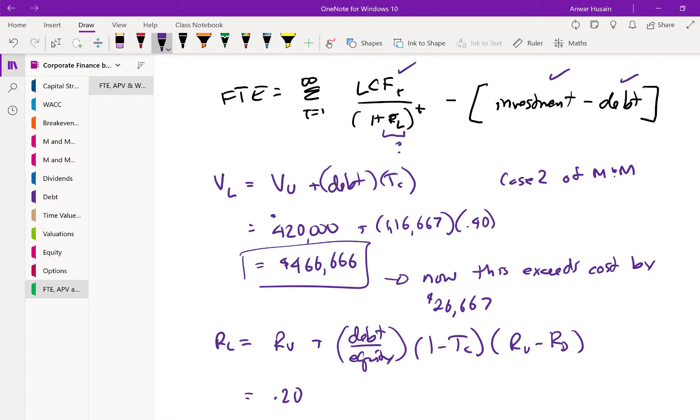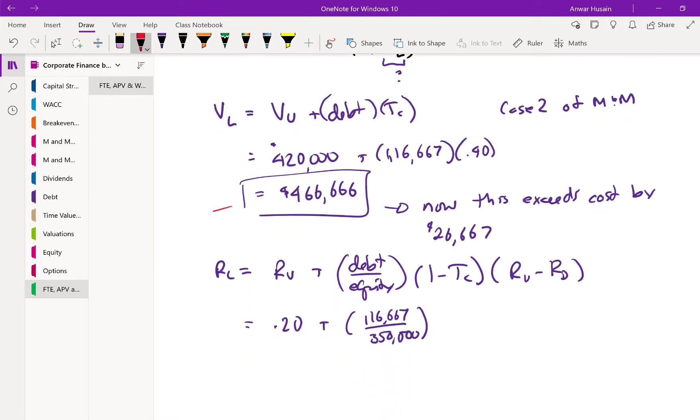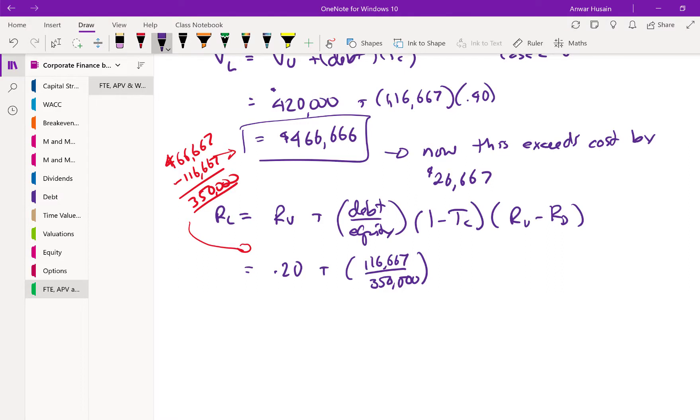We know that the unlevered cost of equity is 0.2. Debt was $116,667. Equity is going to be $350,000. How did I get that? Basically, I did $466,667, that was the value of the firm, minus the debt of $116,667, and that gets $350,000. So that number came down there. The other stuff we know: tax rate was 40%, unlevered cost of equity was 20%, and the cost of debt was given as 10%.